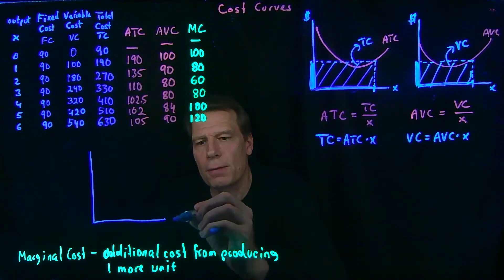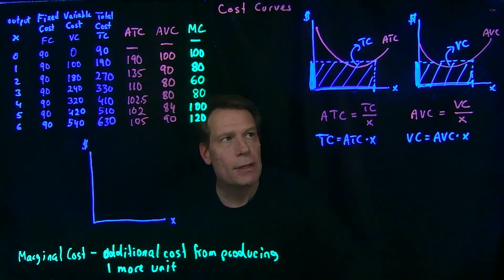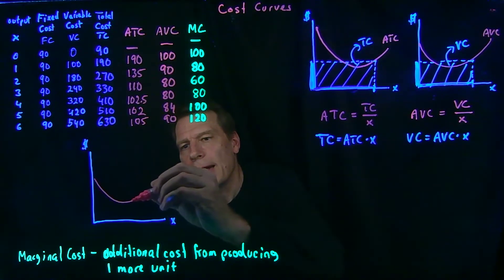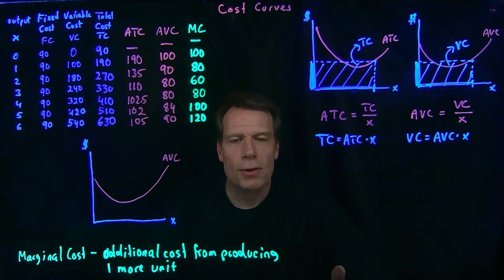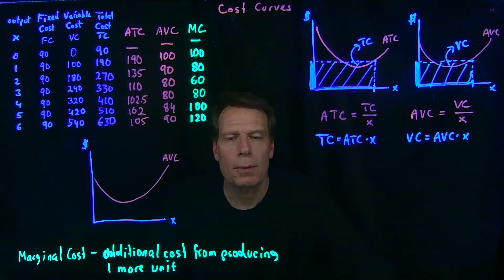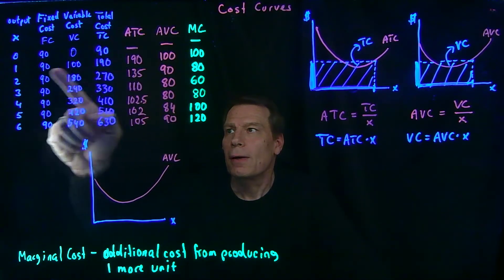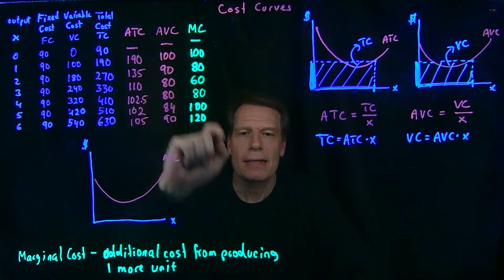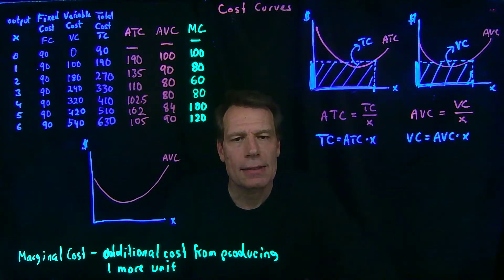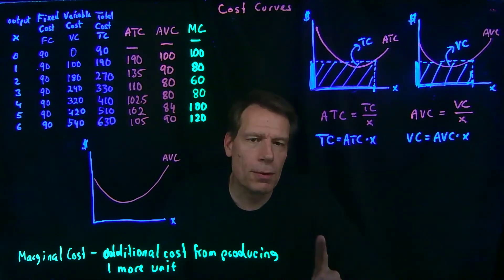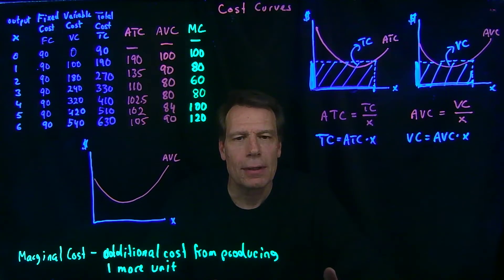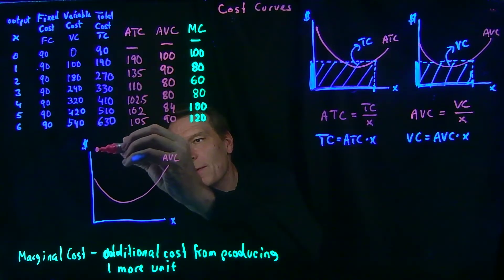If we draw a single picture with output on the horizontal and dollars on the vertical, we can start with the average variable cost curve and see where the average total cost curve lies relative to it. Well, total costs include fixed costs, so the average total cost should lie above the average variable cost. For producing only a single unit, it lies above by 90, which is exactly our fixed cost. The difference between total cost and variable cost is fixed cost, so the difference between average total cost and average variable cost is average fixed cost. When producing a single unit, average fixed cost equals the fixed cost because we're dividing by one.